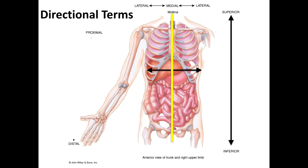The next pair of terms are proximal and distal. For now, we're going to confine those terms to the arms and legs. Proximal, in this case, is closer to the point of attachment of a limb to the body trunk. As you move away from the trunk, you'll become more distal. So your fingertips are distal to your elbow, which is distal to your shoulder.